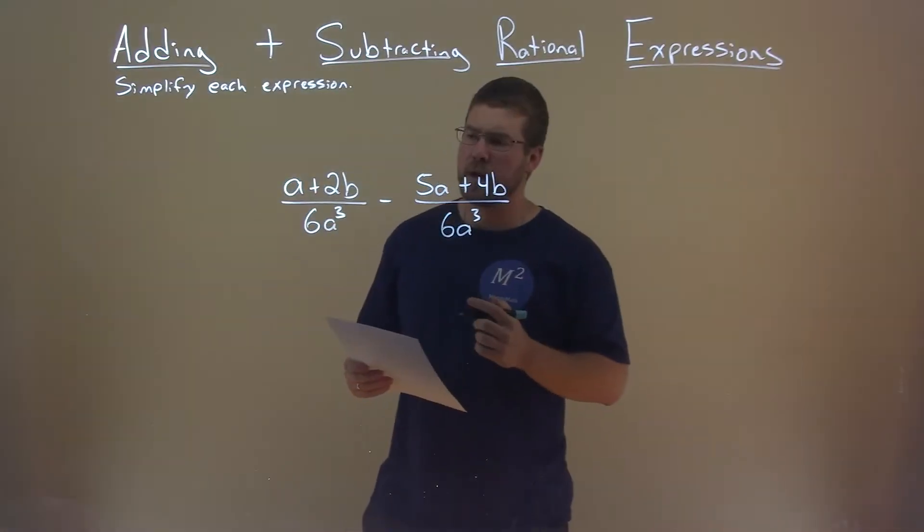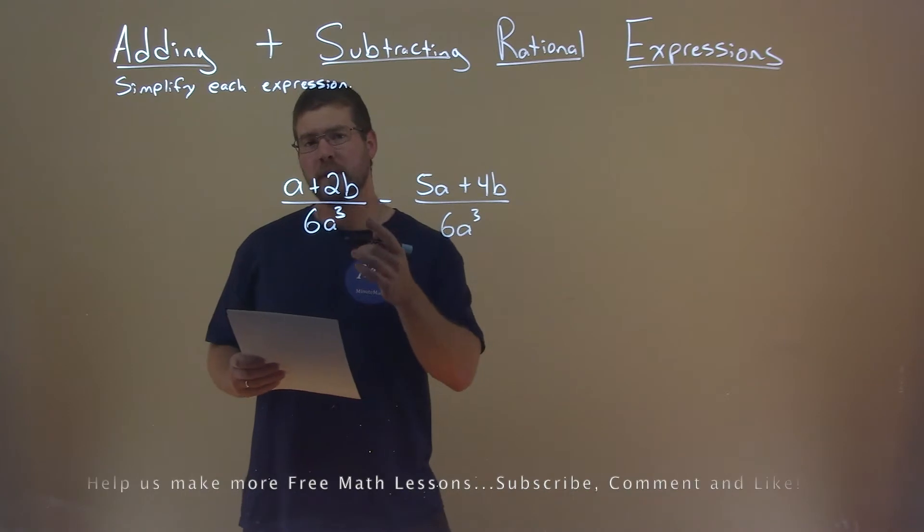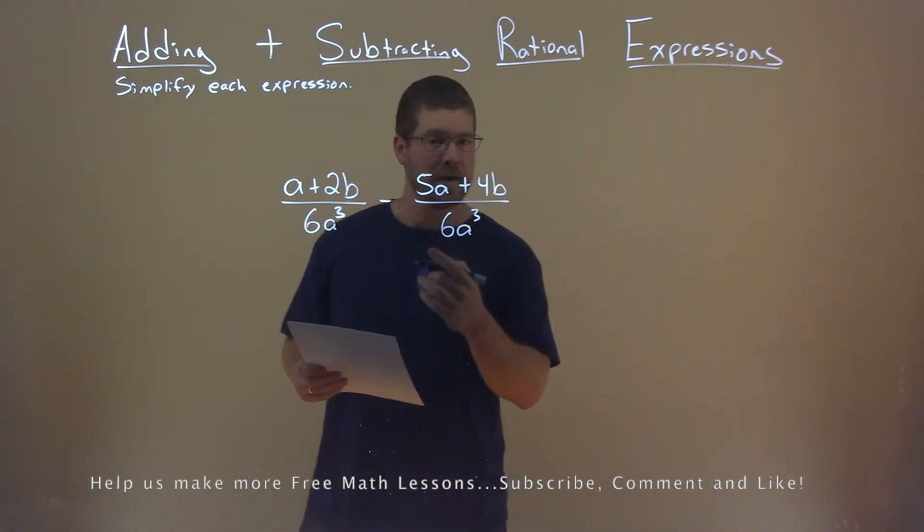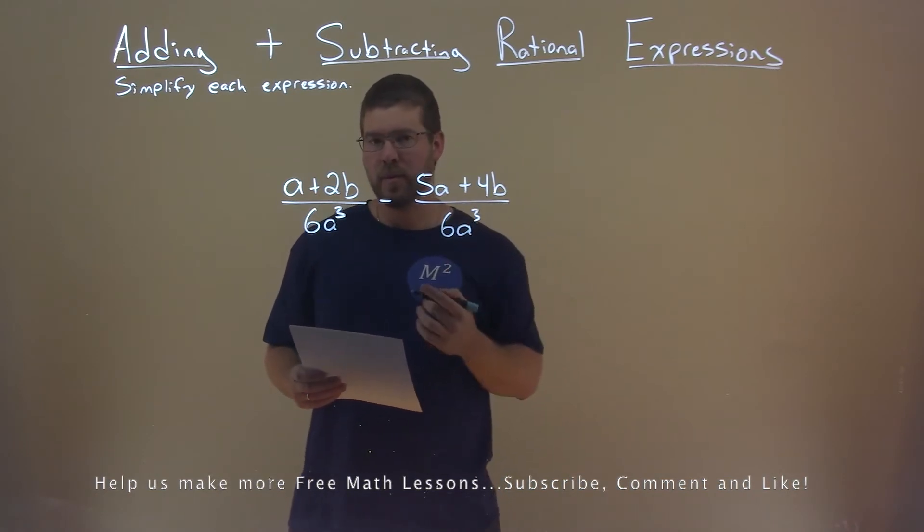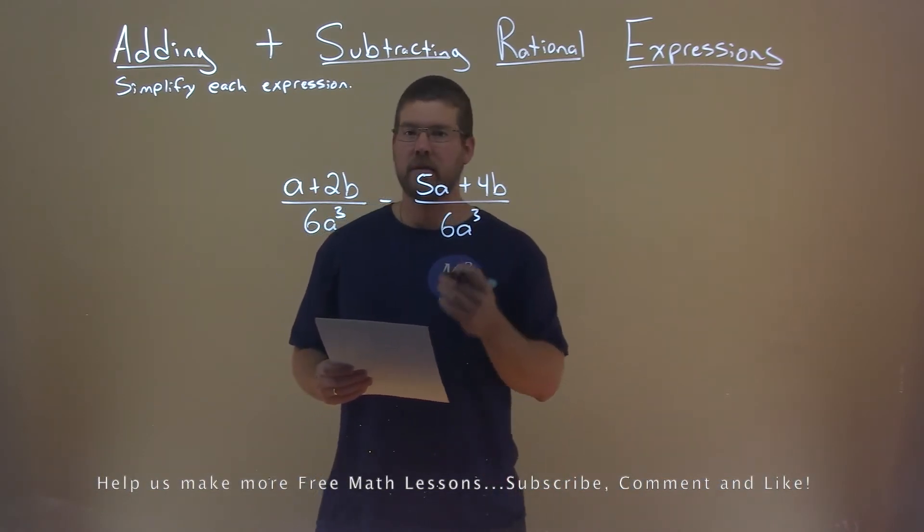We're given this problem right here: a plus 2b divided by 6a to the third power, minus 5a plus 4b over 6a to the third power, and we need to simplify this expression.